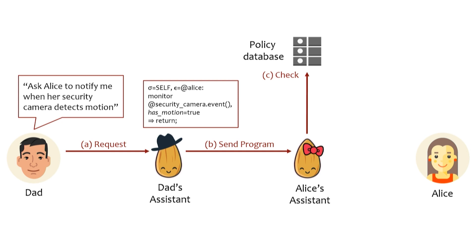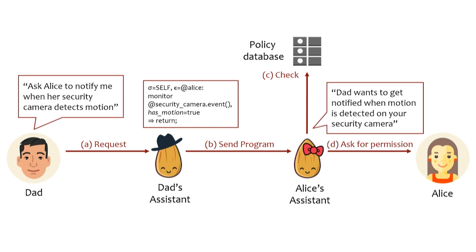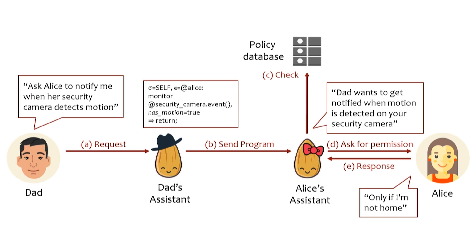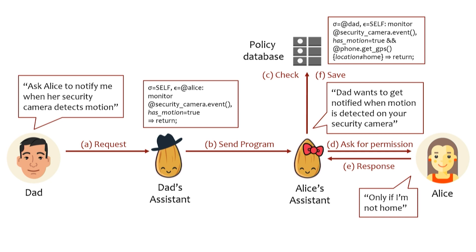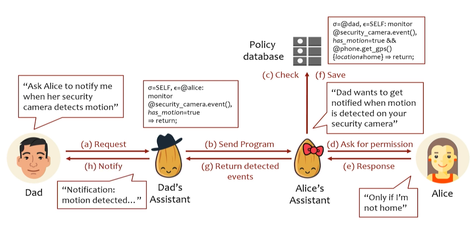We take advantage of the fact that we are using ThinkTalk as the code representation. It's a very high-level language — we can translate not just natural language to ThinkTalk, but also ThinkTalk to natural language. So we can generate a permission request to Alice that matches exactly what the request is: 'Dad wants to get notified when motion is detected on your security camera.' The translation happens on Alice's assistant, so it's guaranteed to be exactly what will be executed. Alice might say 'only if I'm not home,' and the assistant interprets this as a constraint, combining both the request and Alice's constraint, saving it to the policy database, and then executing it — sending the results back to the dad's assistant, which displays the notification.